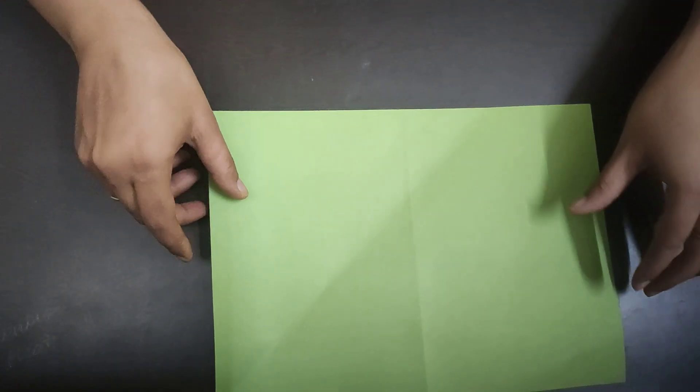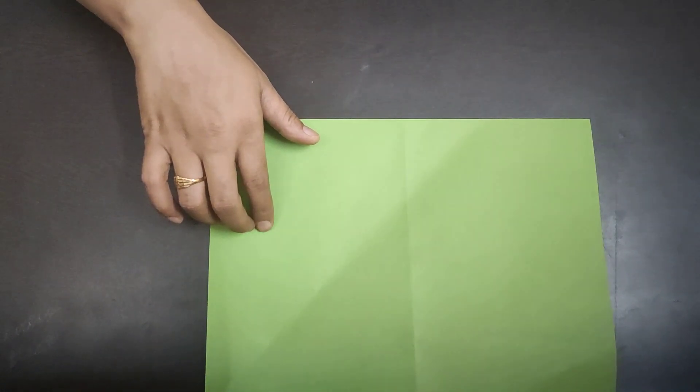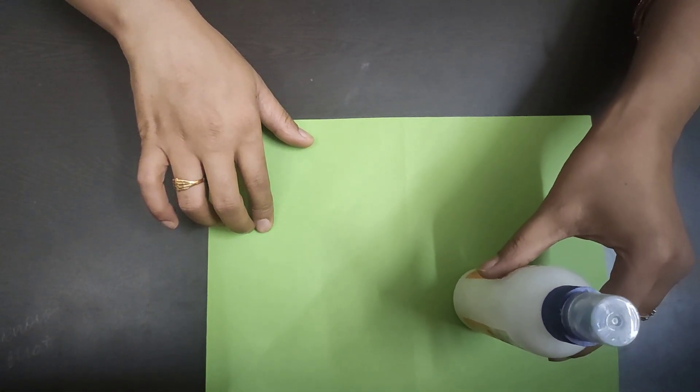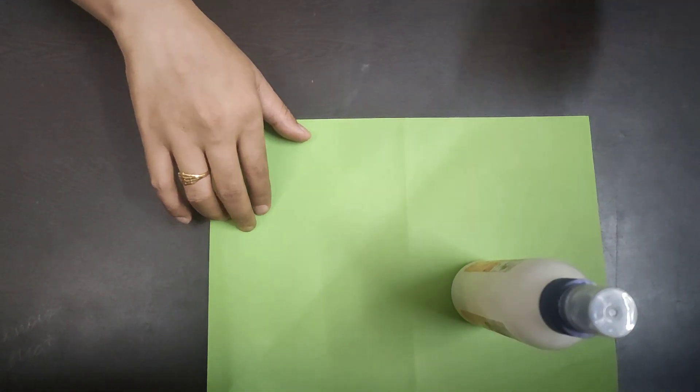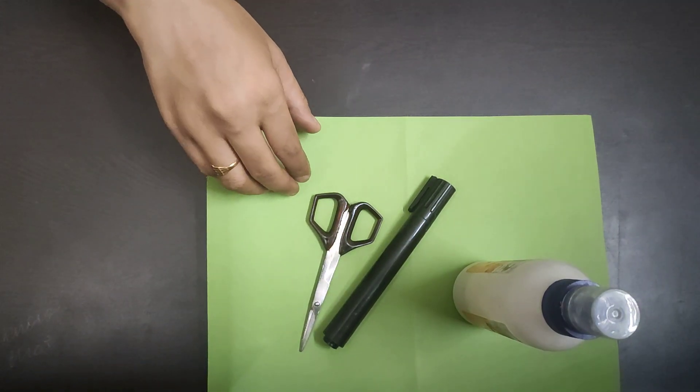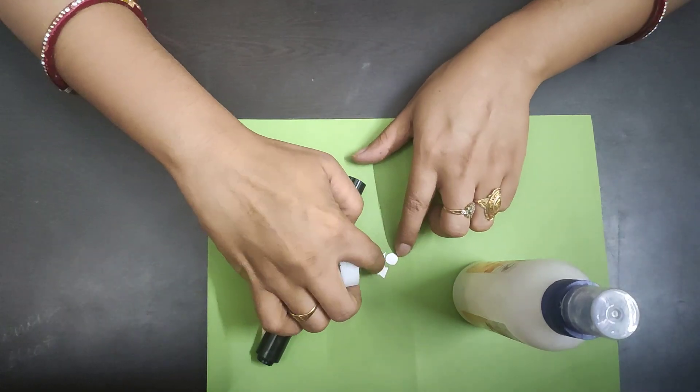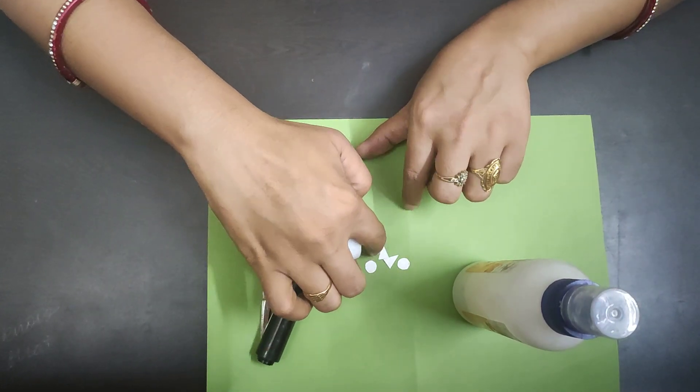Things required for making dinosaur are A4 size colored sheet, fabric glue, black marker, scissor and some cutouts with white paper: two circle shapes, small circle shape and two triangular shapes.